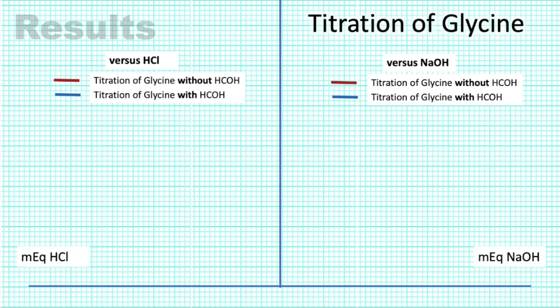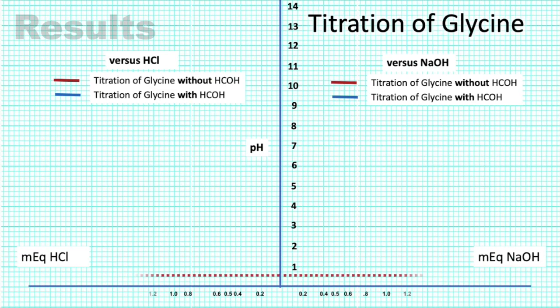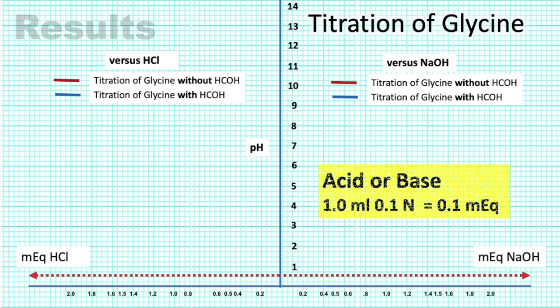Now, using a sheet of graphing paper, plot the values using pH as the ordinate versus the number of milliequivalents of acid or base as the abscissa. Take note that 1 ml of 0.1 normal of the acid or base is equal to 0.1 milliequivalents of corresponding acid or base.